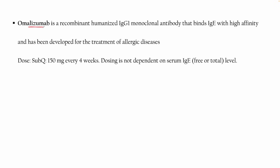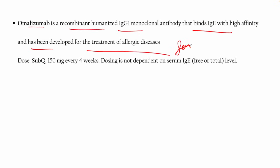Omalizumab is a recombinant human IgG1 monoclonal antibody that binds IgE with high affinity, developed for treatment of allergic disease. The dose is subcutaneous injection of 150 mg every 4 weeks. Dosing is not dependent on serum IgE free or total level.